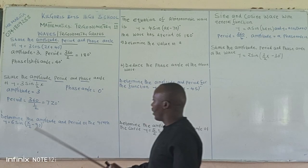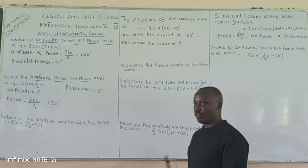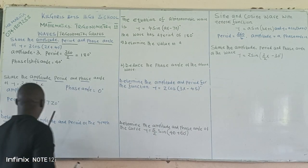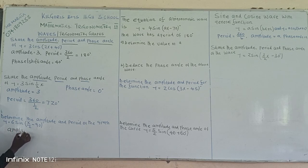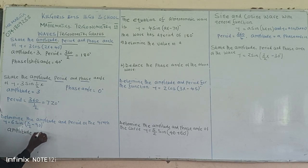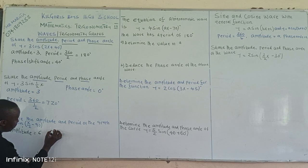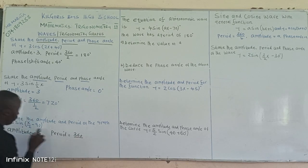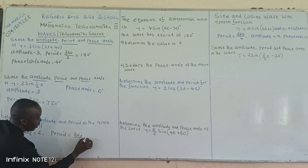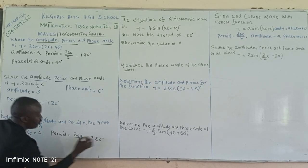Next, we have to find the amplitude and the period of the graph. The amplitude is 6. The period is 360 divided by the coefficient of x, which is 1 over 2. Dividing by 1 over 2 gives us 720 degrees.